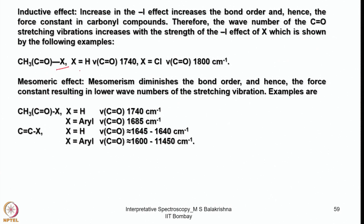The second factor is the mesomeric effect: mesomerism diminishes the bond order and hence the force constant, resulting in lowering of the stretching vibration wave number. For example, when X = H the carbonyl is at 1740 cm⁻¹, but replacing X with an aryl group brings it down to 1685 cm⁻¹. In another case, X = H gives 1645 to 1640 cm⁻¹, and replacing X with an aryl group drops it to 1600 to 1145 cm⁻¹. In summary: inductive effect increases stretching frequency, mesomeric effect decreases it.